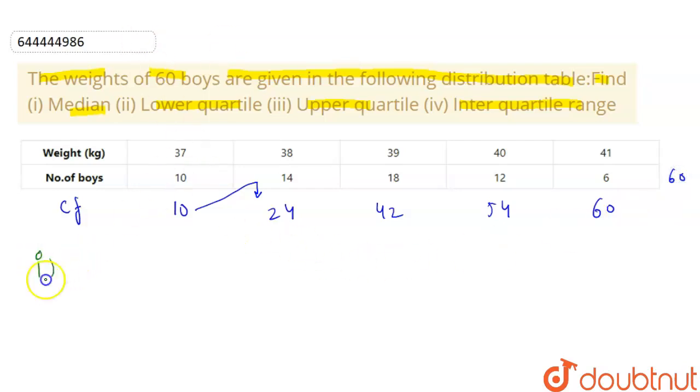So the first part here is we need to find median. Median, here our n is 60, which is even. So the formula becomes: this will be average of n by 2 plus n plus 1 by 2th term, and average means by 2.